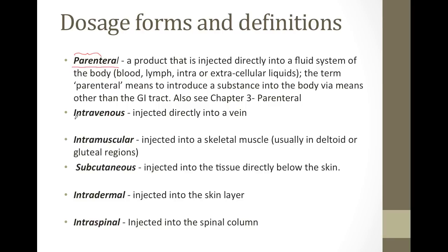The different types of injection are: intravenous, which is injected directly into a vein; intramuscular, which is injected into the skeletal muscle, usually the deltoid or gluteal regions; subcutaneous, which is injected into the tissue directly below the skin; intradermal, which is injected into the skin layer; and intraspinal, which is injected into the spinal column.